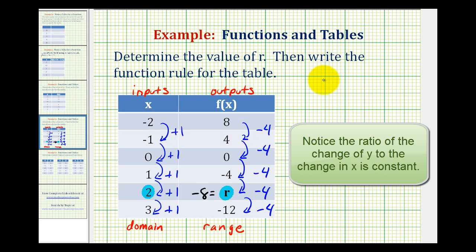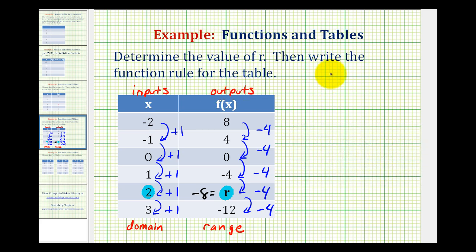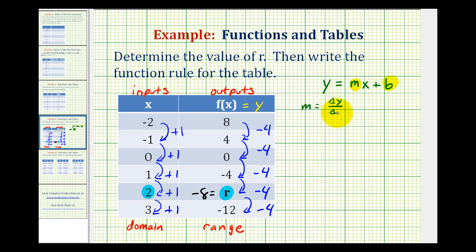Because of this, we can use the slope-intercept form of a line to help us determine the function rule for this table. We'll use the form y equals mx plus b, where m is the slope and b is the y-intercept. Remember, f of x is equal to y. By analyzing this table, we should be able to determine the slope and y-intercept. The slope is the ratio of the change of y to the change of x. Looking at our table, the change of y is negative four when the change of x is positive one, so negative four over positive one tells us the slope is negative four.